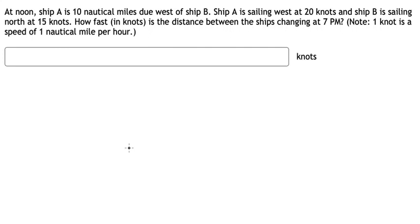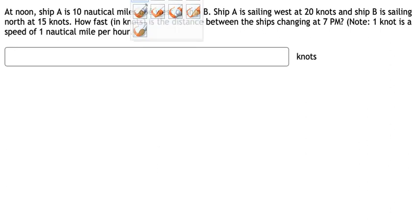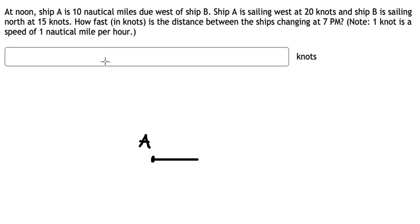Hey guys, welcome back to my channel. Today I will show you how to answer this one. We know that ship A and ship B — the distance is about 10 nautical miles. If we draw the diagram, we have it like this: this point is about ship A and this one is about ship B.